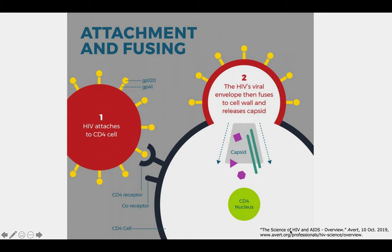Invasion of the CD4 cells begins with attachment to the membrane of the CD4 receptor and co-receptor binding site, as seen here. After invasion, it can then reverse transcribe its RNA into DNA and insert its DNA into the host cell DNA, which leads on to the natural progression of a virus.